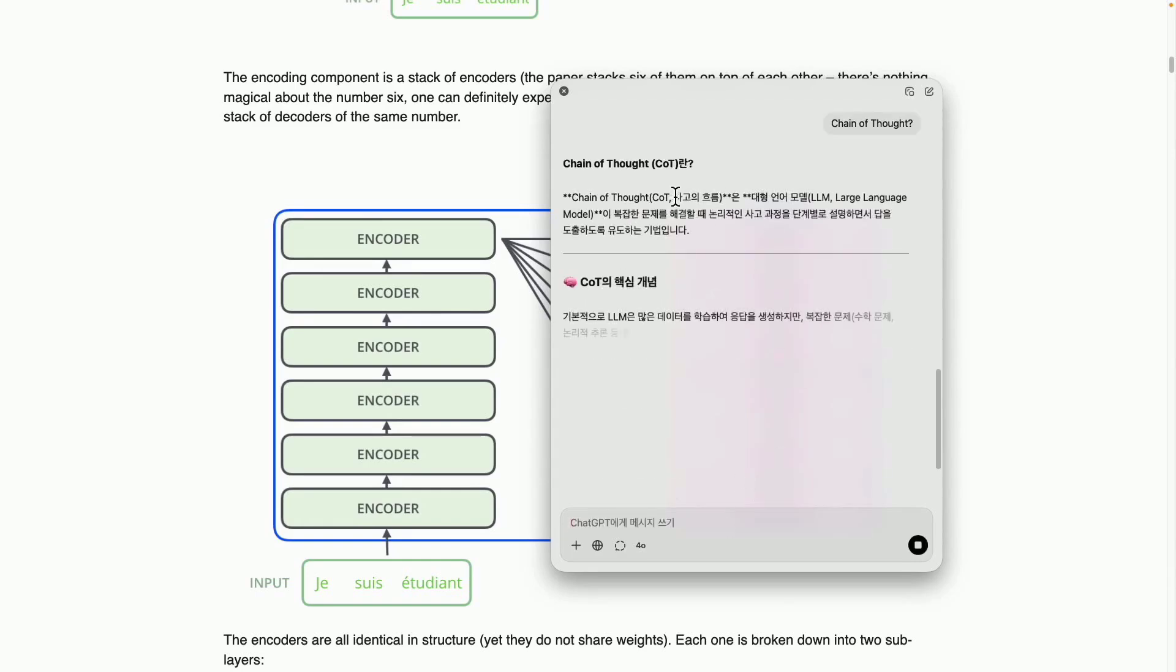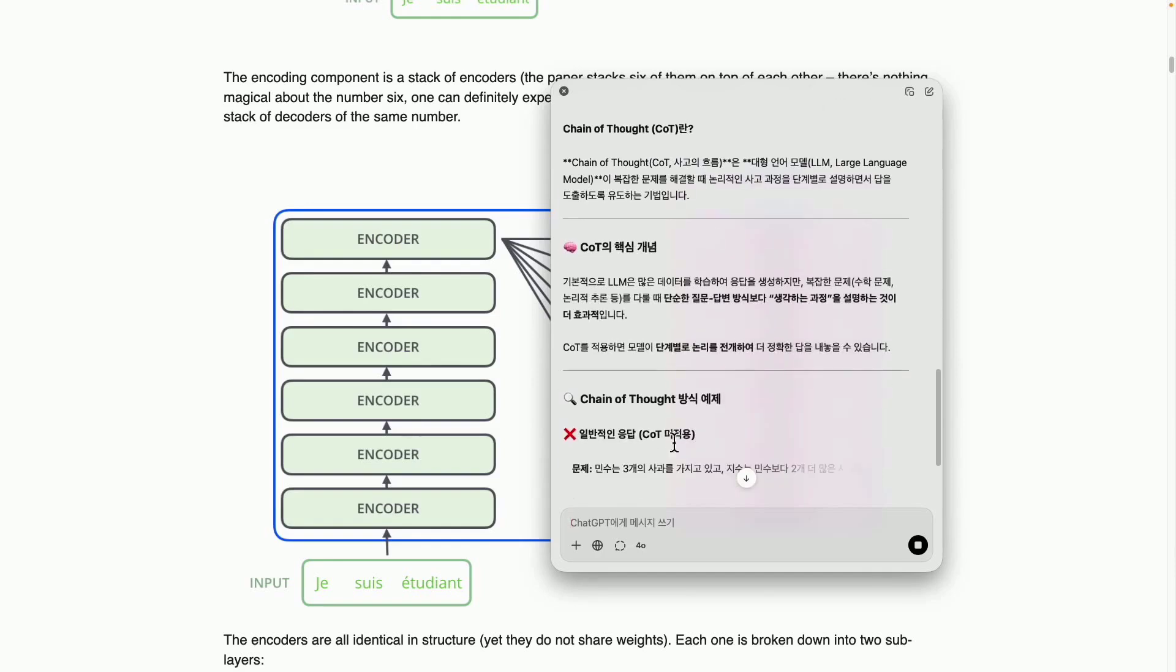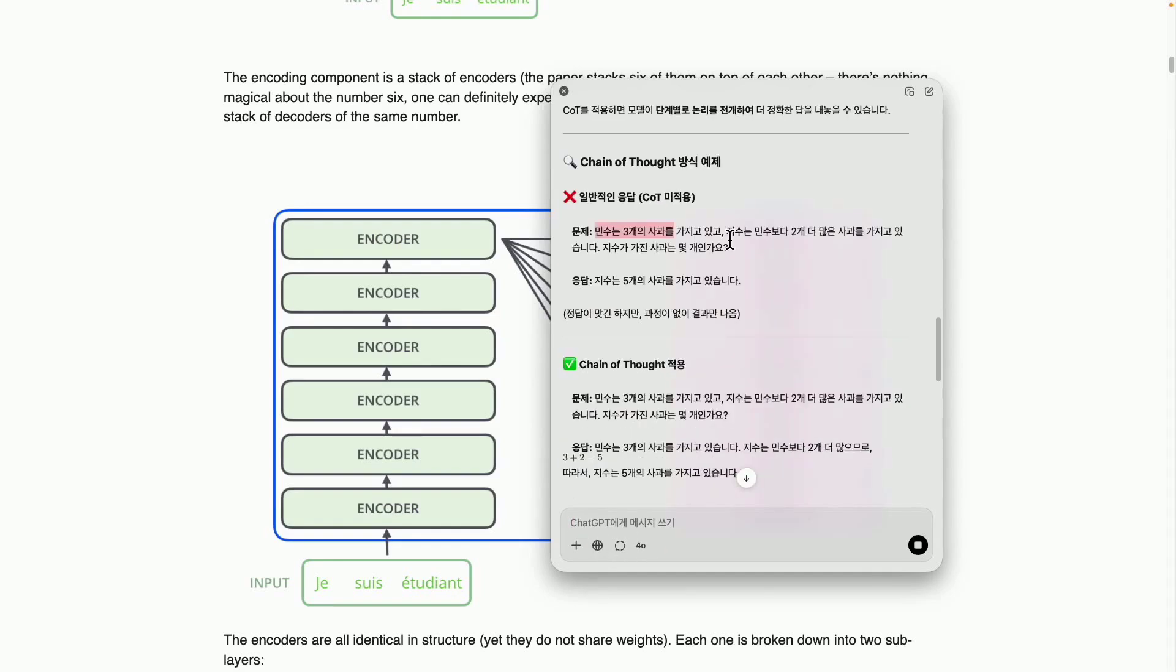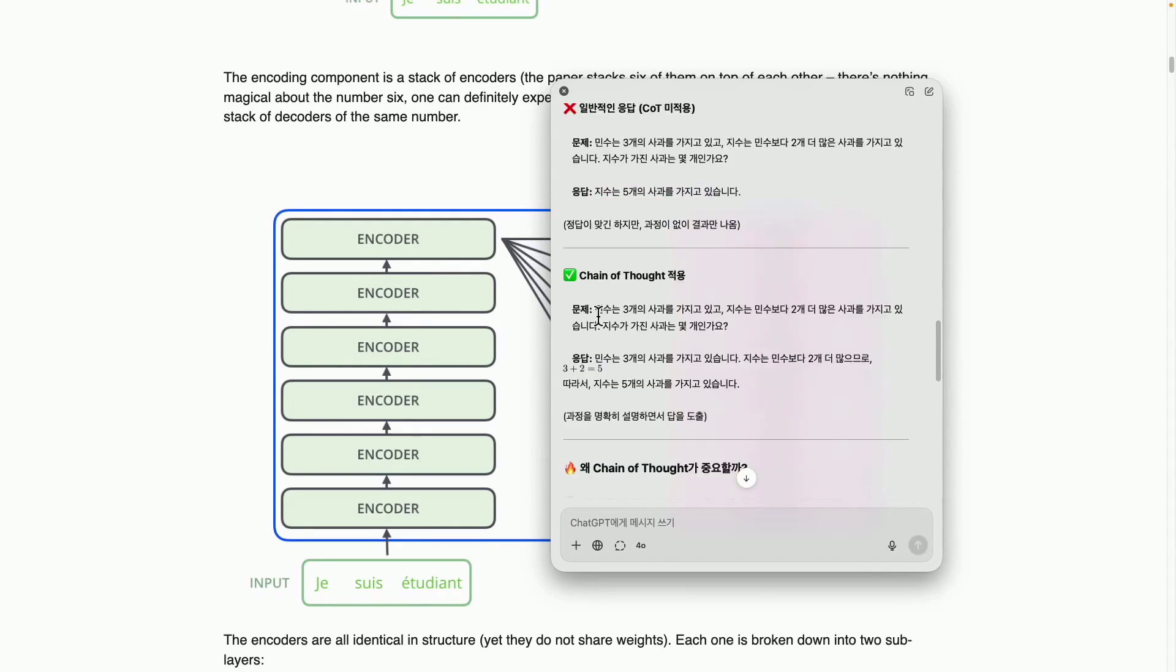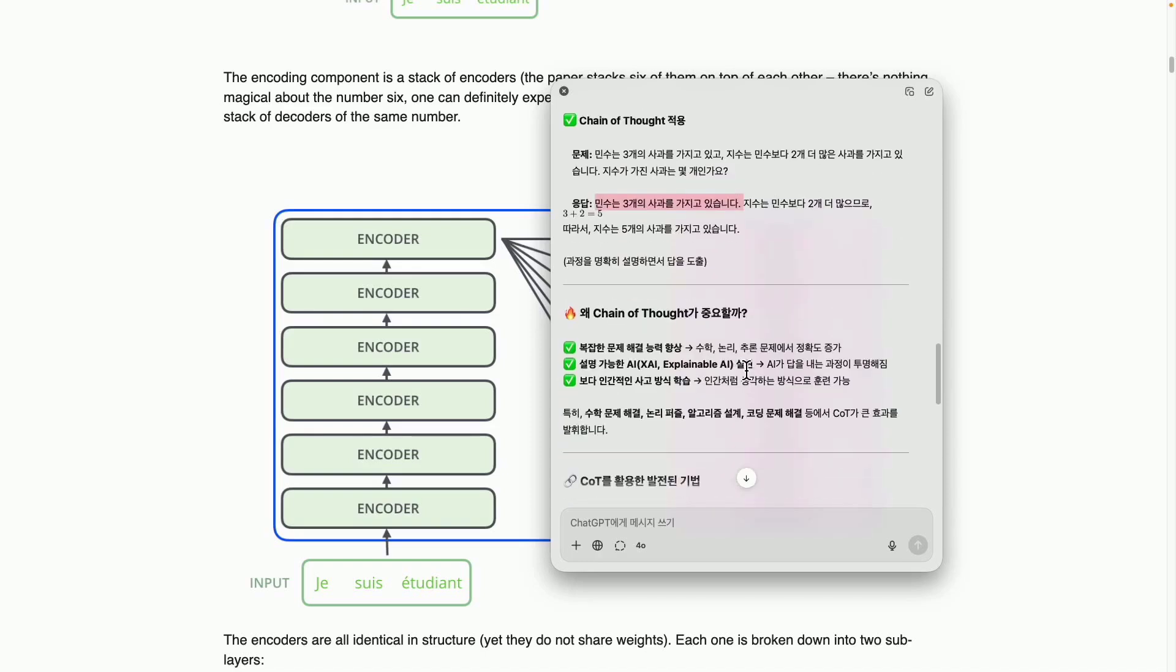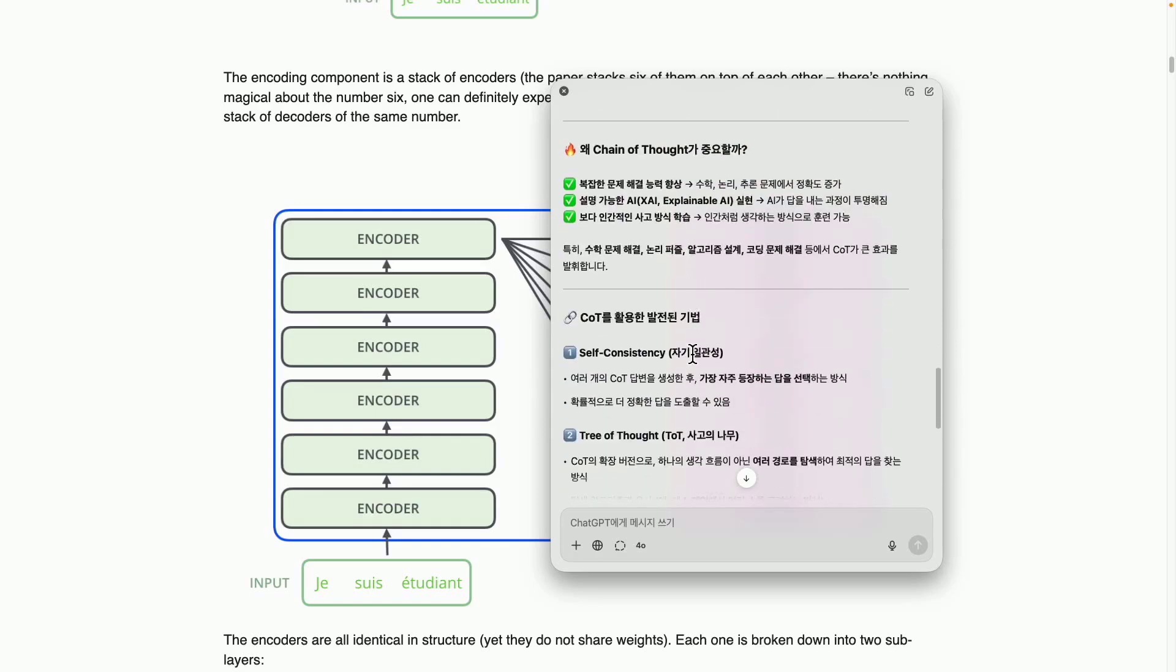Furthermore, the chain of thought method, which involves systematically linking steps rather than merely listing numbers like 2, 4, 6, enables the process to be articulated more thoroughly. This methodical approach allows the model to grasp the context better and provide more accurate responses. The idea is to create longer text, and by doing so, if we apply reasoning, it can lead to further advancements.